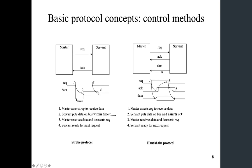From the moment the master reads the ACK, which is now a logic high, it knows the data on the data bus is valid, so it's safe to read. After reading the data, the master will de-assert the request, indicating that data has been read. Then the servant will respond by de-asserting the ACK and also de-asserting the data. So the servant is ready for the next request.